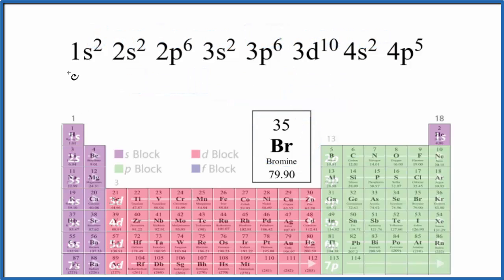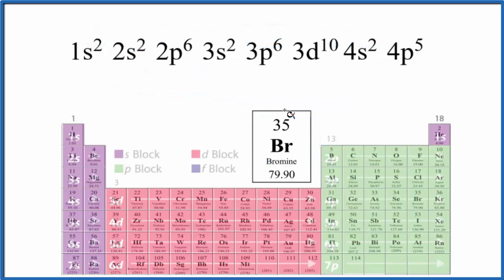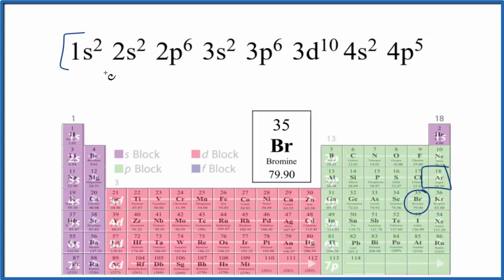Let's start with bromine. This is the full electron configuration for bromine. We have 35 protons, so we'll have 35 electrons since this is neutral. We can condense this by finding the noble gas before bromine. Going back, we find argon, which has 18 electrons. This is the noble gas core — we just write argon and then the rest of these electrons.